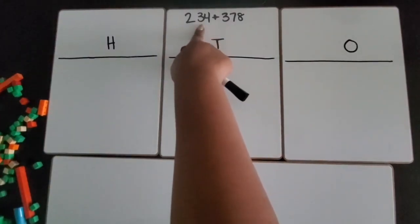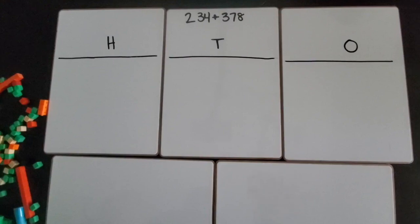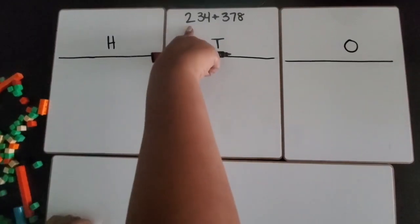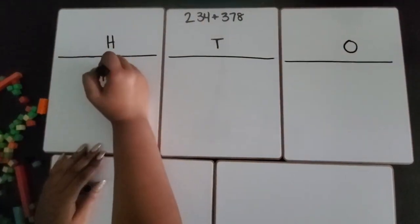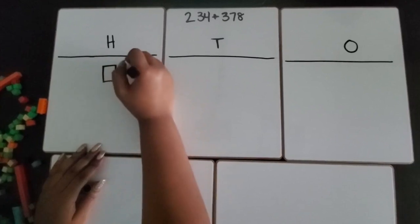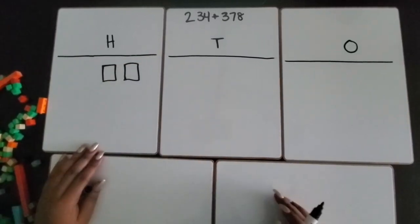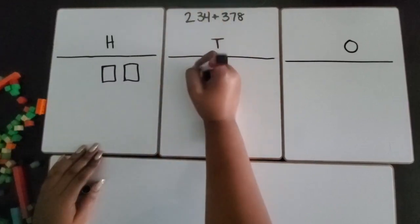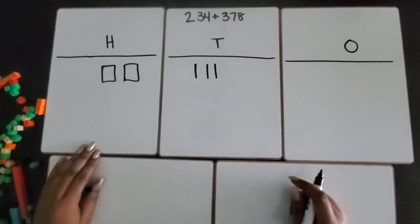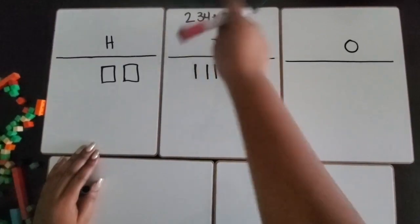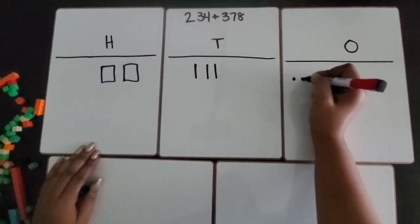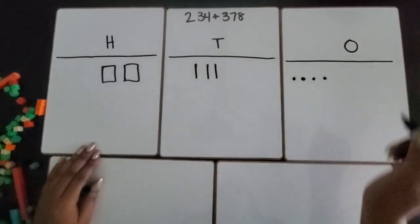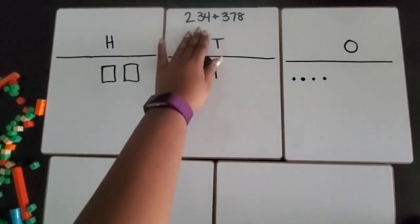So we're going to start with the first number 234. 234 has two hundreds in the hundreds place. I'm going to draw quick squares to represent the hundred flats. 234 has three tens. I'm going to draw three tally marks to represent the tens. And 234 has four ones. I'm going to draw four dots to represent the ones. So I have 234.